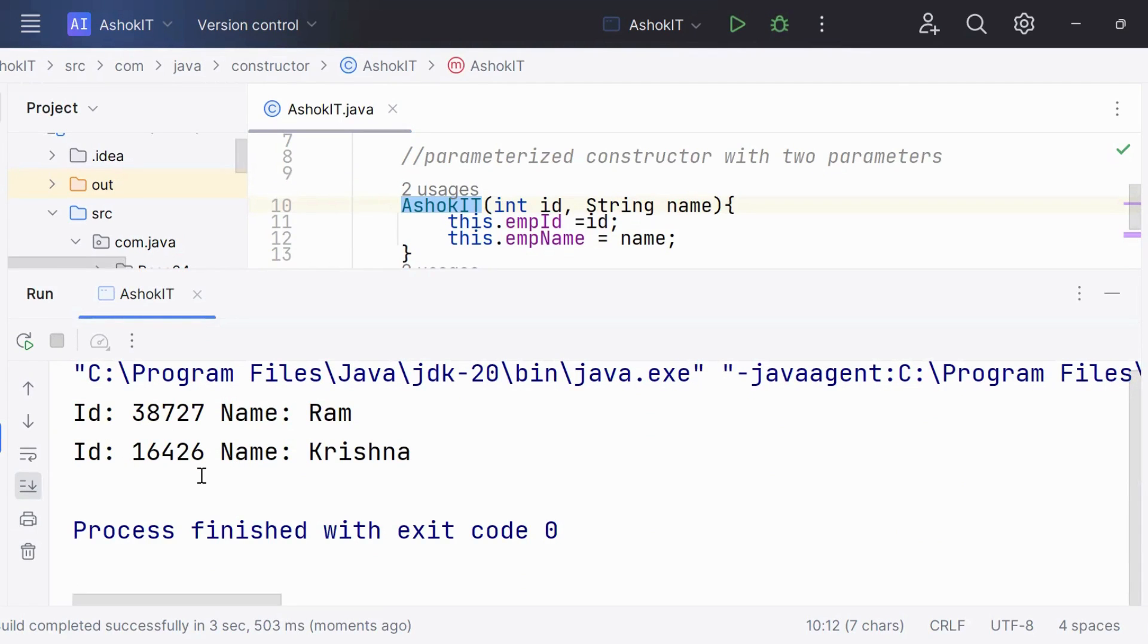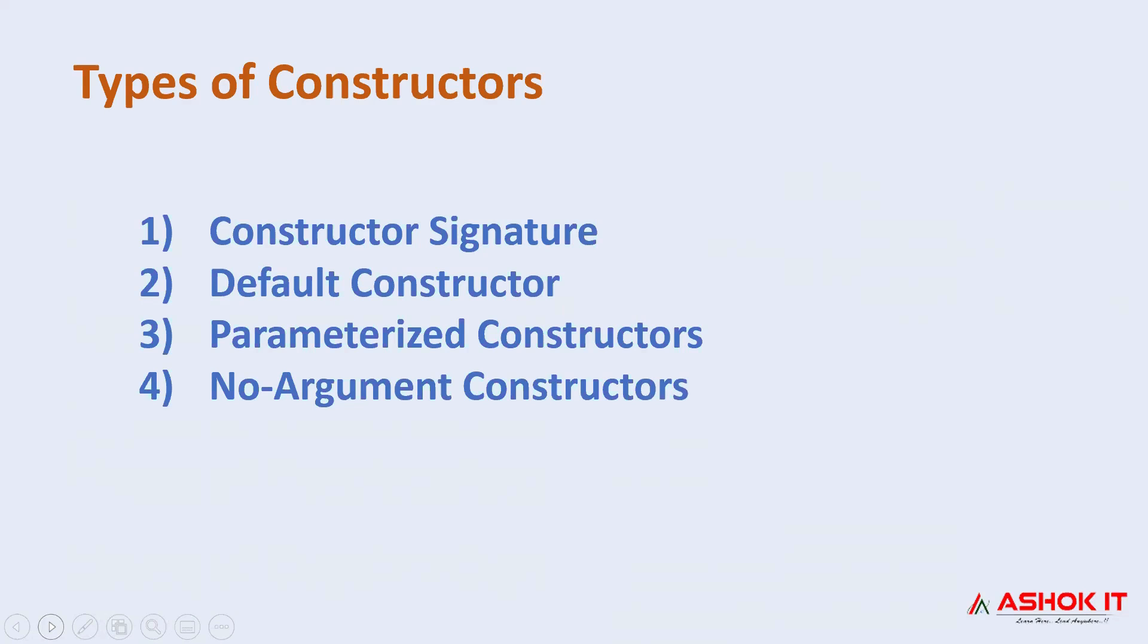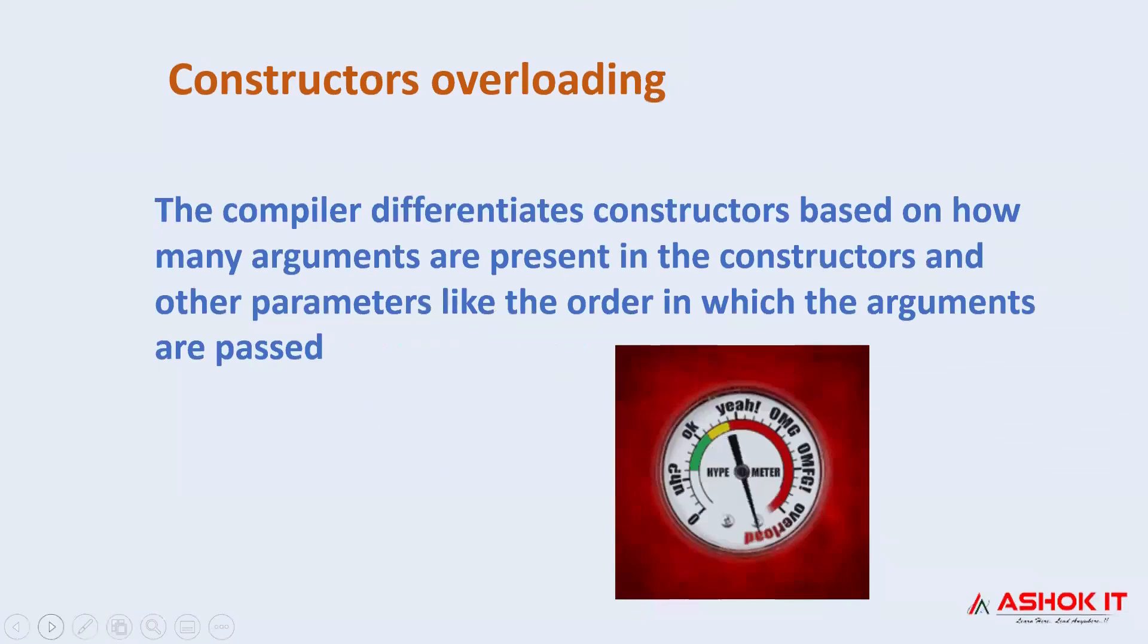Now we can see this program is successfully executed, and for both objects we got the output successfully created. You can check ID is assigned to ID and name is assigned to name.